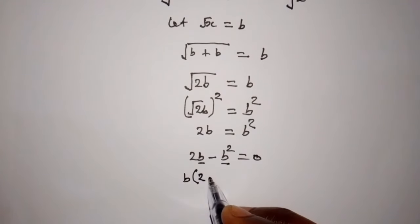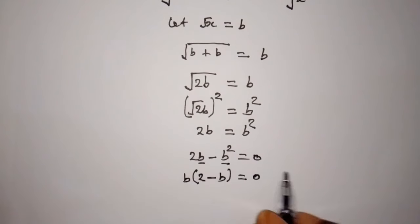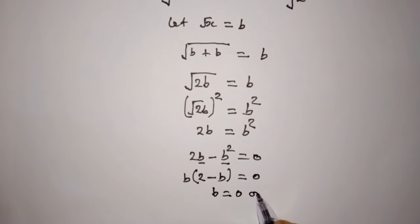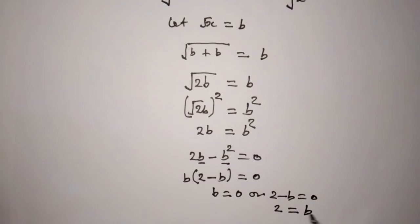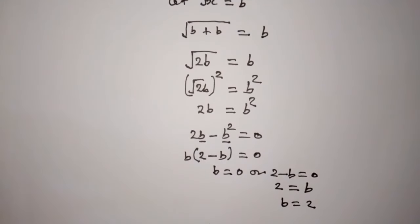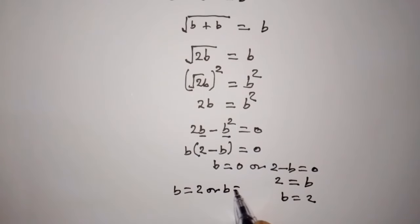b times 2 minus b is equal to 0. So b is equal to 0, or 2 minus b is equal to 0, which gives b is equal to 2. Our answer for b is b equals 2 or b equals 0.